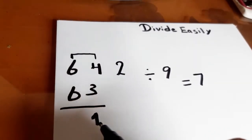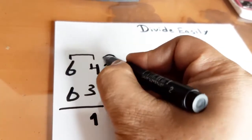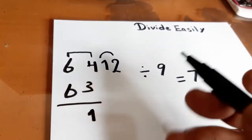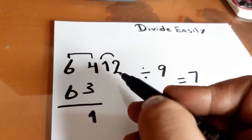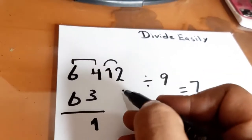We will take 1 and write it here beside 2. Now we have a new number, 12. But 12 is also indivisible by 9, so we will reduce 12 until it is divisible by 9. It will be reduced to 9.